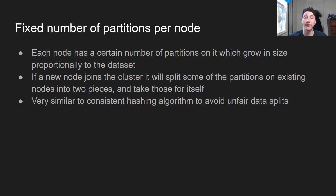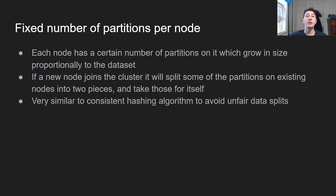Now let's look at a third approach: a fixed number of partitions per node. As the data set grows, each of the partitions on each node is going to grow proportionally with it. However, if a new node joins the cluster, what these algorithms will actually do is take some pieces of the partitions on each node and take those for themselves. If you've heard of the algorithm consistent hashing, which I'll eventually make a video about, this is actually pretty similar to that — basically taking a bunch of random points around a ring and making it so that the new node is going to handle those parts of the partition.